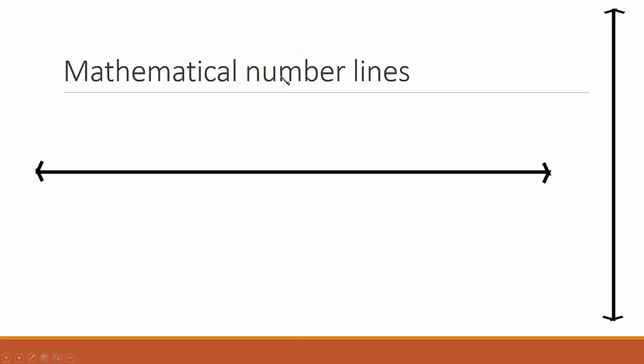Now in mathematical number lines, the arrows at both ends show that numbers can go on forever. They're ideas. Up or down, forwards, or backwards.